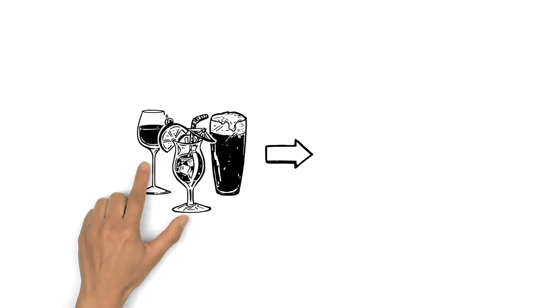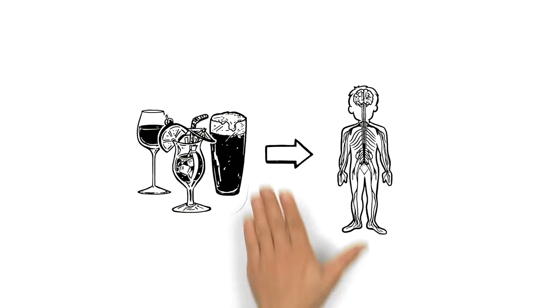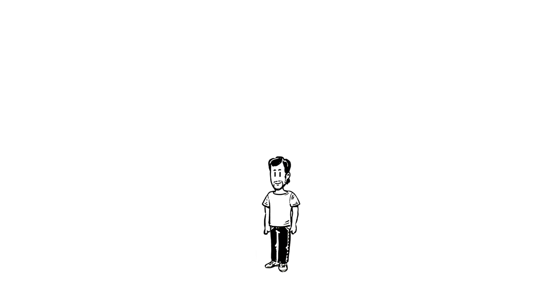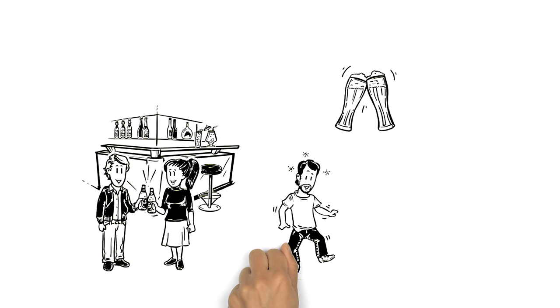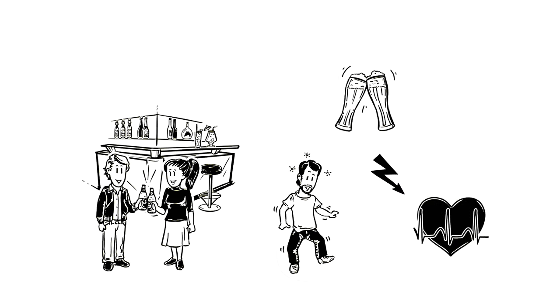We explain what alcohol does to your body. This is Michael. He enjoys going out and drinking at the weekend, sometimes a bit more than he should. He's worried that it might be affecting his health. What exactly is alcohol doing to him?